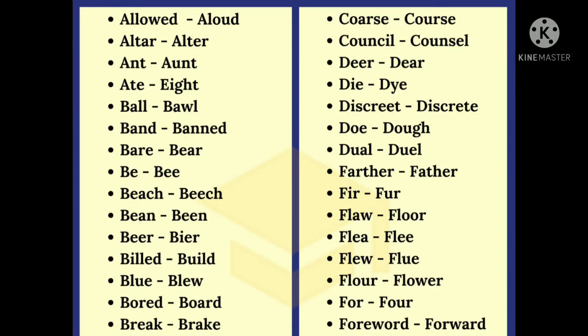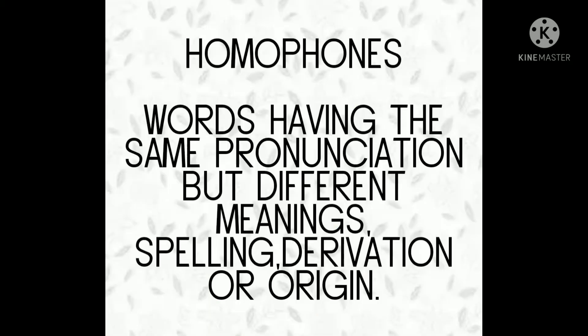Have you seen that there are a few words which are pronounced the same but are different in meaning, spelling, derivation, or origin? For example, accept and except, or access and excess. What are these sets called? Well, they are known as homophones. Today we are going to take up a few sets of the most confusing words, or more appropriately homophones, and find out the difference between those words and when to use which word.